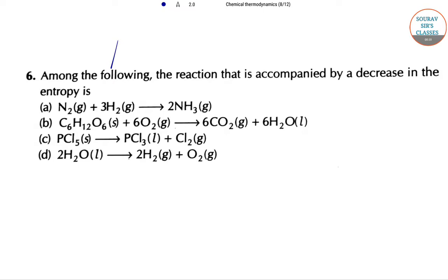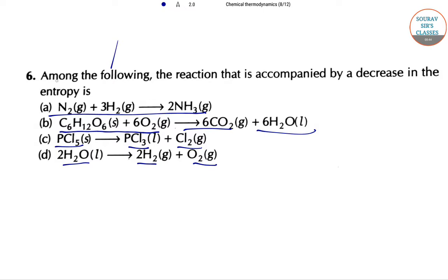Which of these reactions will be accompanied by a decrease in entropy? The options are: nitrogen gas plus 3 hydrogen gas forming ammonia; C6H12O6 (glucose) plus 6O2 giving 6CO2 and 6H2O; PCl5 forming PCl3 and Cl2; and 2H2O forming H2O and oxygen.